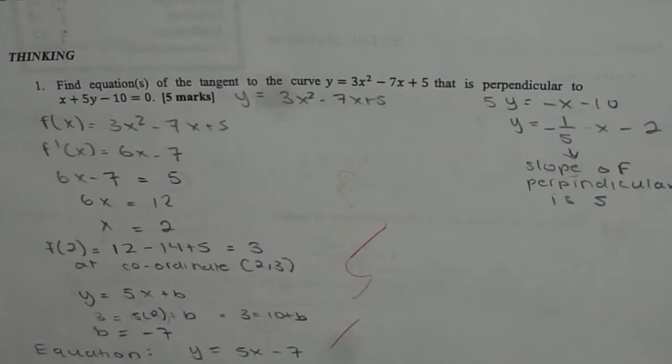Find equations of tangent to the curve y equals to 3 x square minus 7 x plus 5 that is perpendicular to x plus 5 y minus 10 equals to 0.